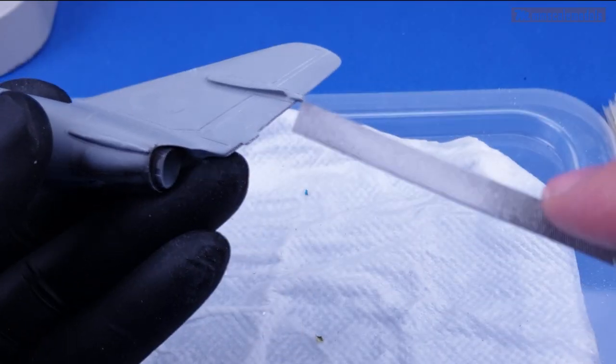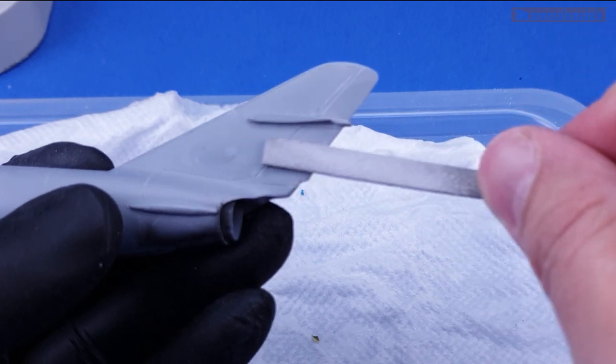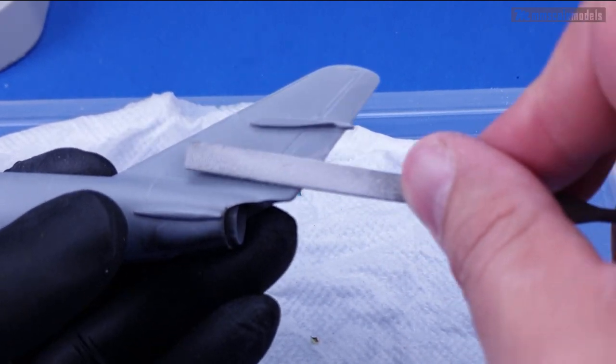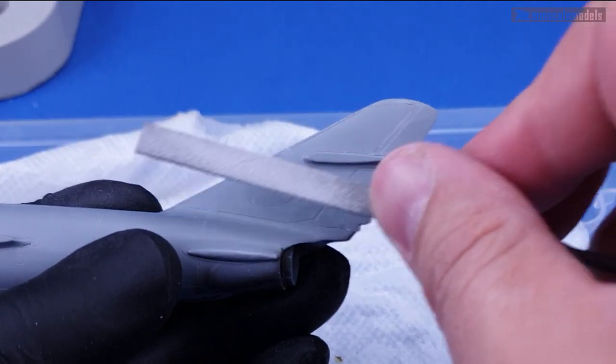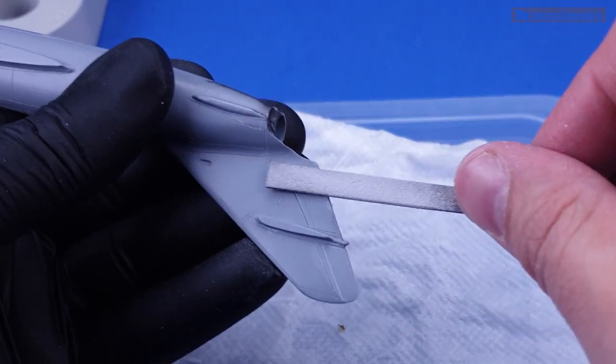Another area that needed reshaping was the trailing edge of the tail. It was very thick and out of scale but I managed to get it down to a presentable thickness.